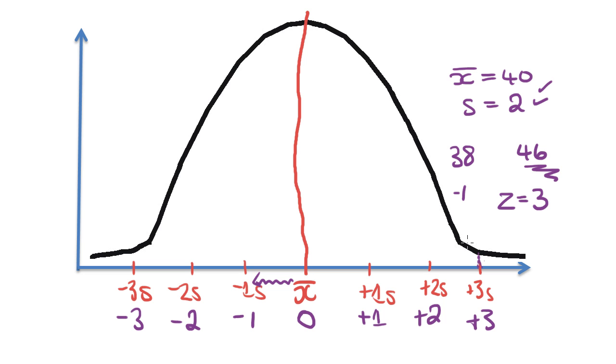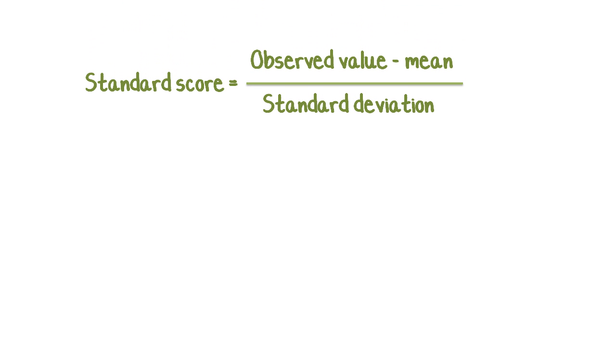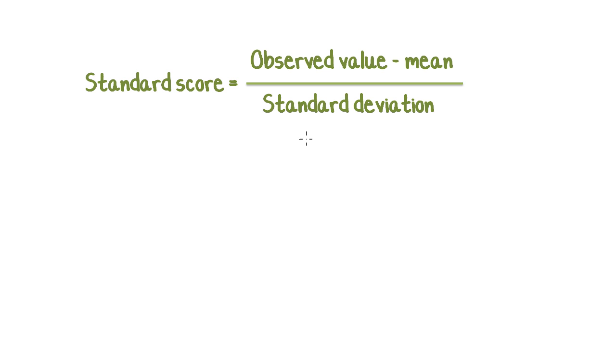So how do you work out a Z-score? On this example, it's really obvious because we're counting to either side of 40. That's some easy maths to do in your head. But if you had more complicated numbers, you need a formula, and this is what it looks like. The formula is the standard score, which is the Z-score, is equal to the observed value, so you might call that x, minus the mean, which we draw like this, x with a little bar, divided by the standard deviation, so all over s.